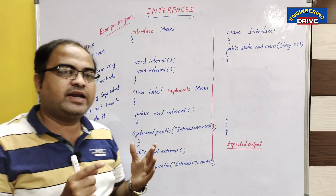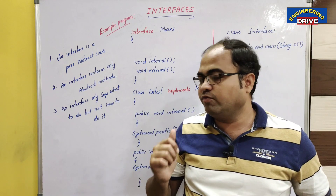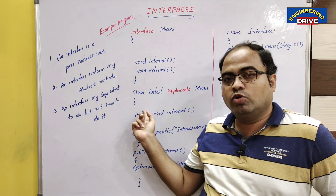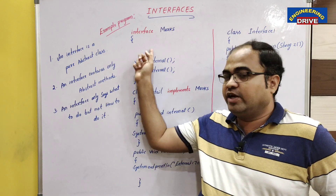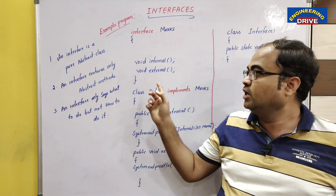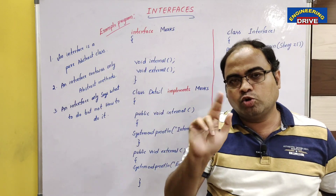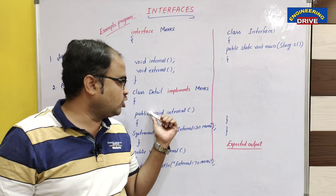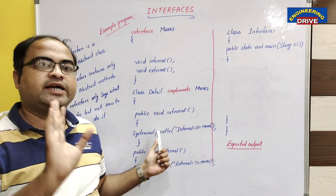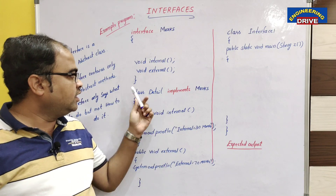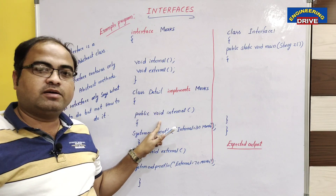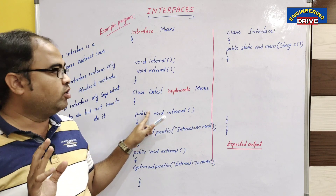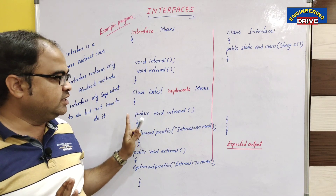Student question: Is the public modifier compulsory? Yes, this is also a very important point. The class implementing the interface must provide definitions to all the abstract methods of the interface. There are two abstract methods, and we have provided definitions for both. If the class does not provide the definition, you will get an error. Compulsory, the method providing the definition must have the modifier 'public'.